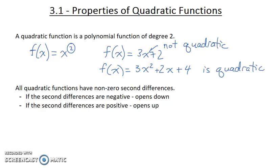All quadratic functions have non-zero second differences. And so if the second differences are negative, that means it's going to open down. The parabola is going to open down. If the second differences are positive, the parabola is going to open up.